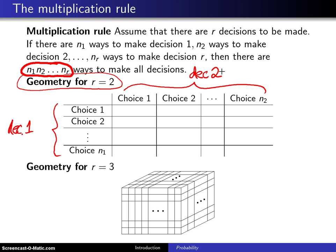then you can see that there is an n1 by n2 matrix of possibilities, which means there are n1 times n2 different ways to make all the decisions in this case.